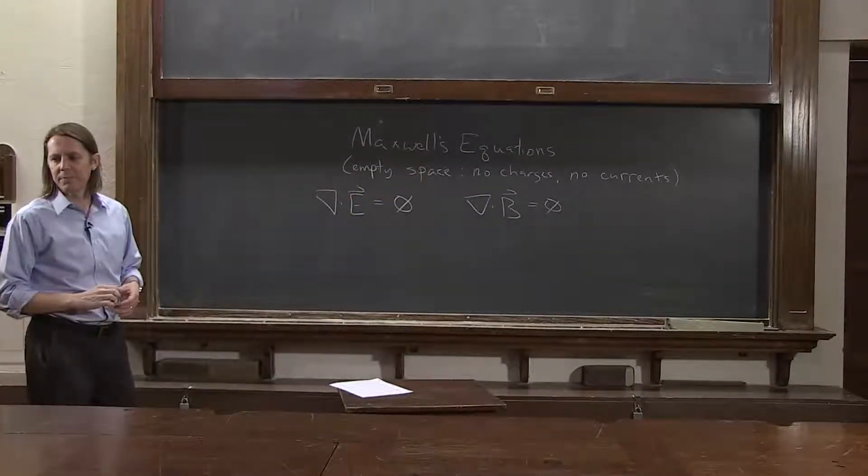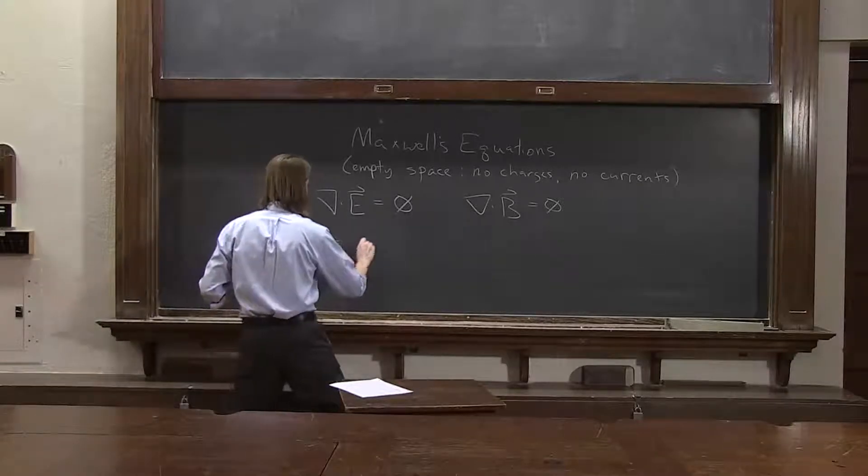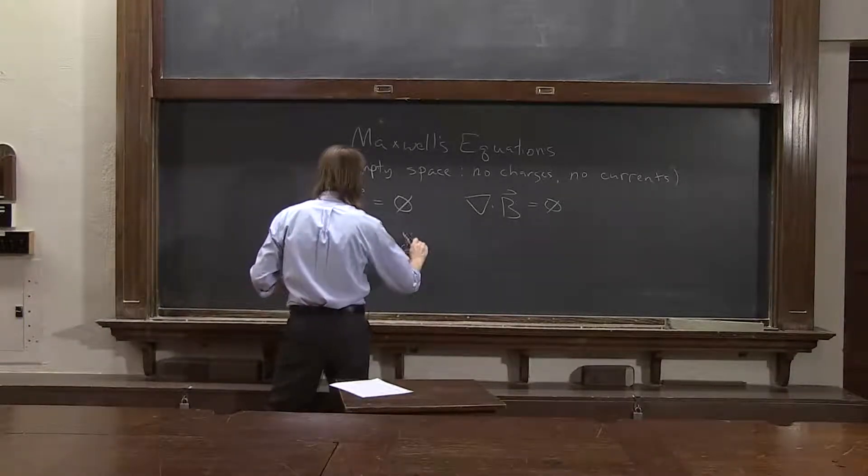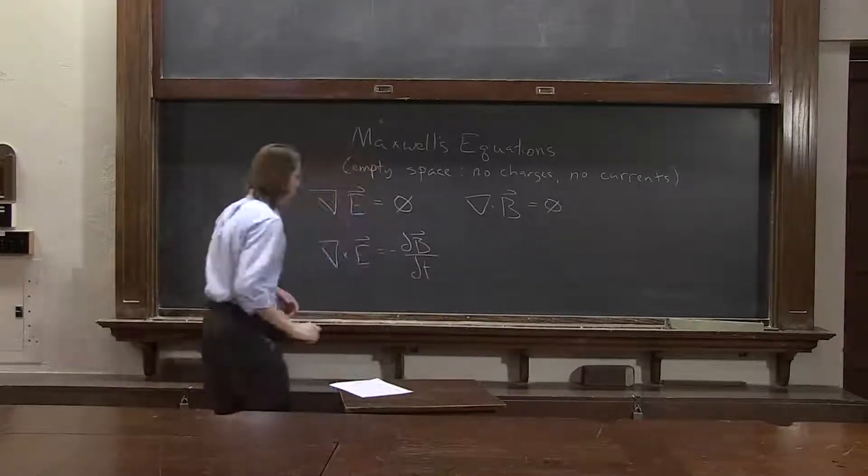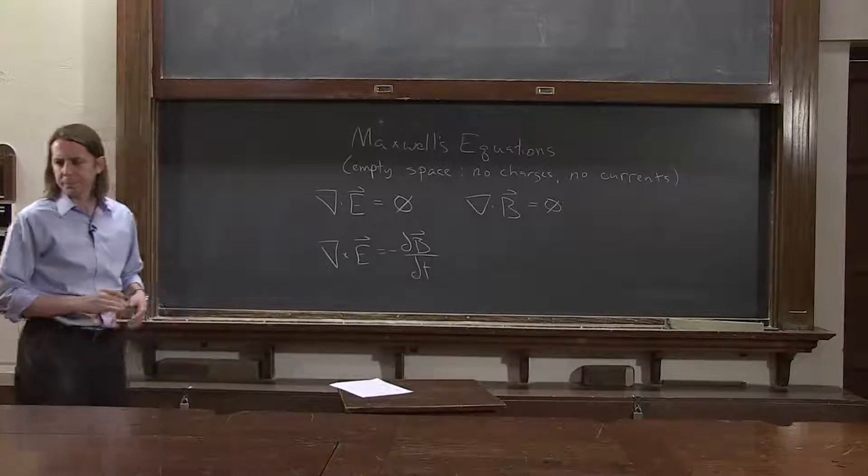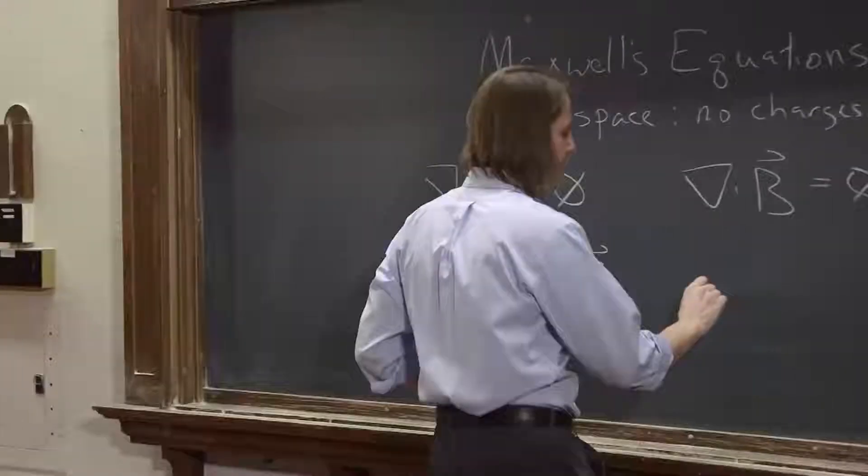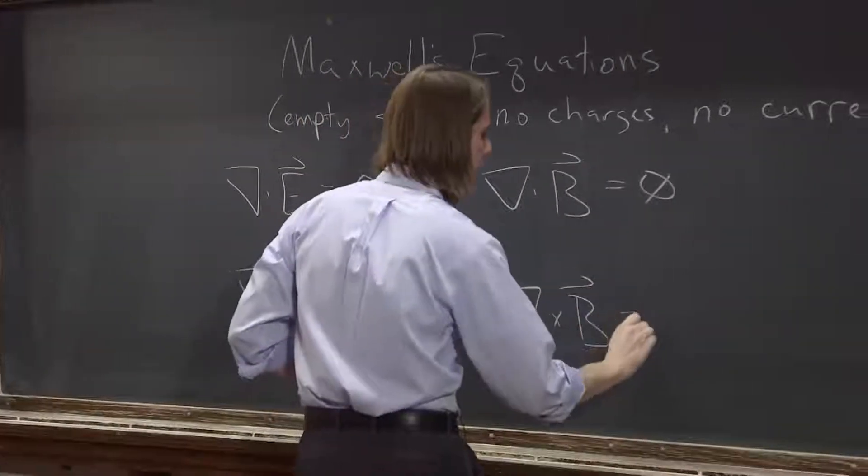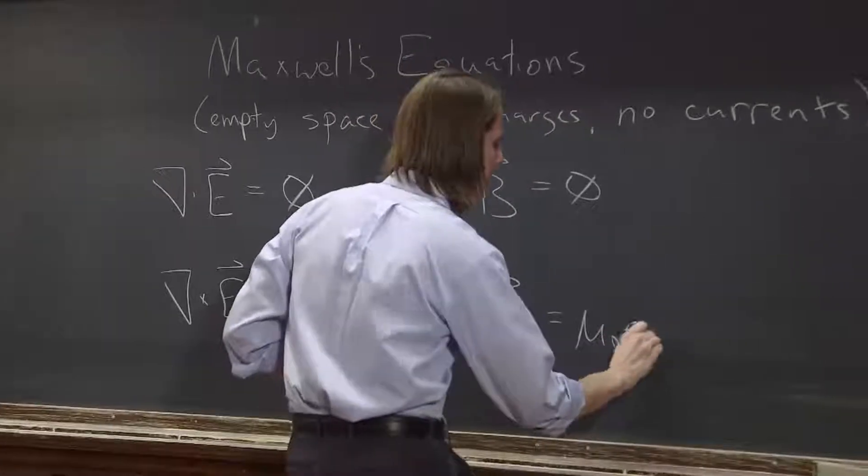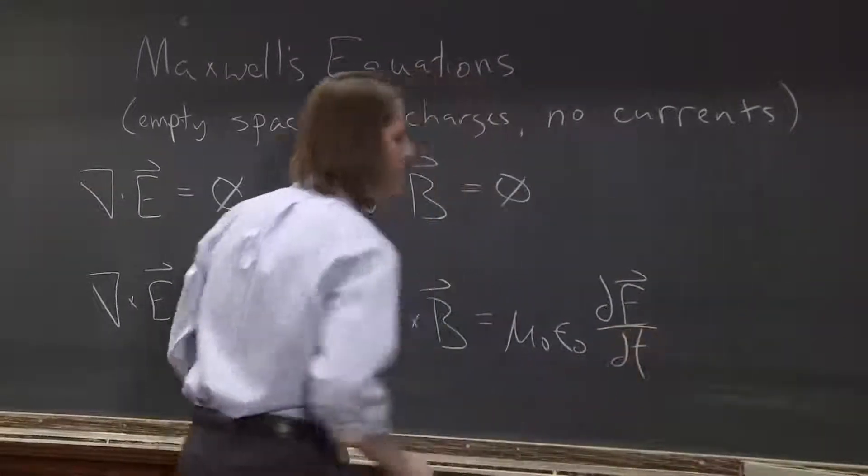We have del cross E equals minus dB/dT. And then finally, our new one from Ampere-Maxwell. We have del cross B equals mu naught epsilon naught dE/dT.